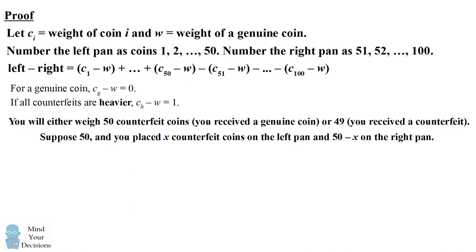Suppose that we are weighing 50 counterfeit coins and we're placing x of them on the left pan and 50 minus x on the right pan. Each of these counterfeit coins will contribute 1 to this left minus right. So we have left minus right equals x from the left pan minus 50 minus x from the right pan. This simplifies to be 2x minus 50.